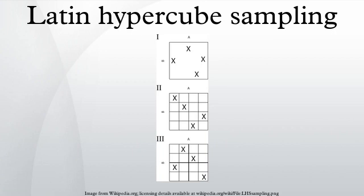This independence is one of the main advantages of this sampling scheme. Another advantage is that random samples can be taken one at a time, remembering which samples were taken so far.